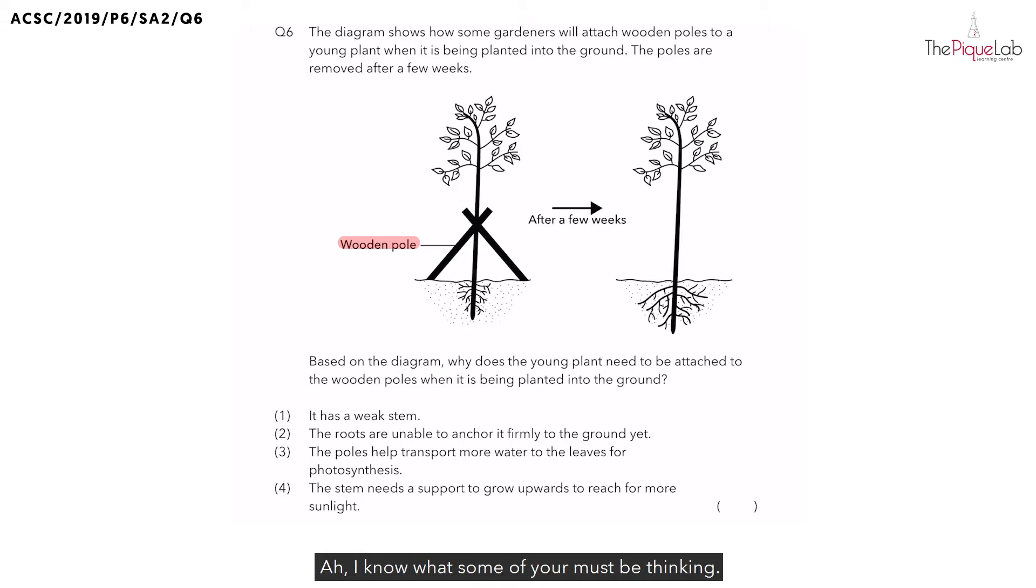I know what some of you must be thinking. Since this question is asking why does the plant need to be attached to the wooden poles, you would think that it must be because this plant has a weak stem. So, the answer should be option one. But, is that true?